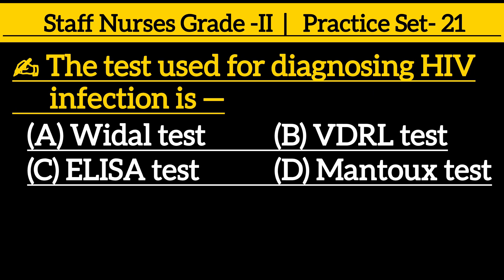The test used for diagnosing HIV infection is: Option A, vital test; Option B, VDRL test; Option C, ELISA test; Option D, ...